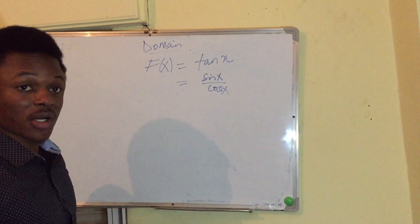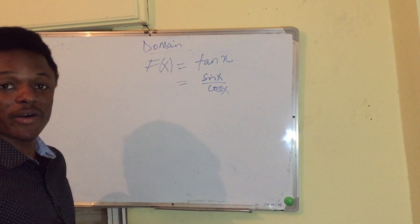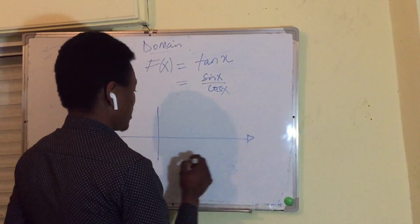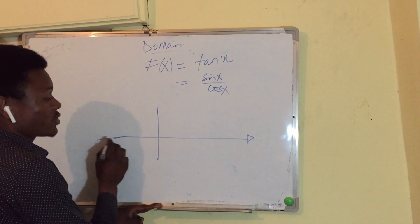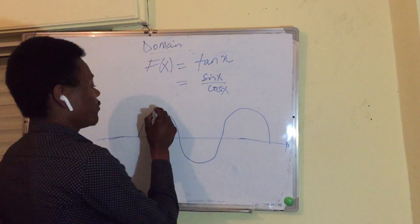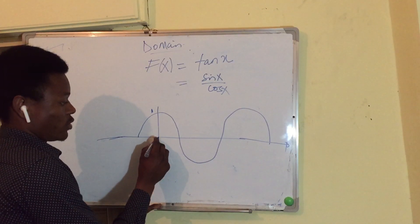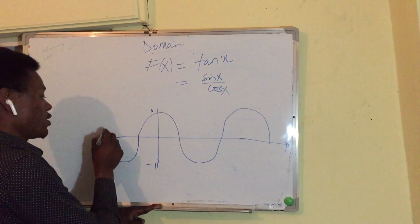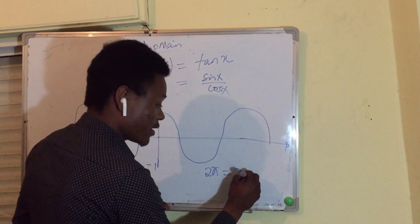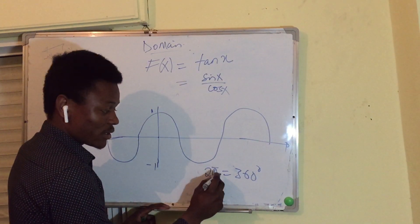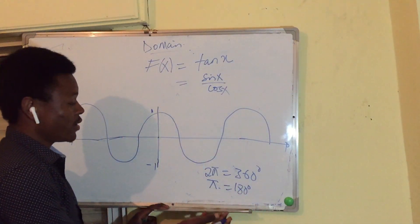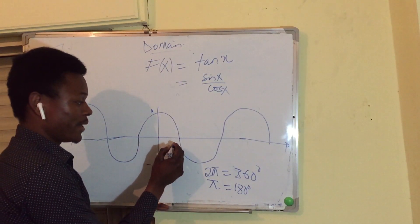So cos(x) cannot equal zero. To find where cos(x) = 0, let us look at the graph of cos(x). The graph of cos(x) starts at 1 when x = 0, comes down to -1, and follows a cyclic pattern. One complete cycle is 2π, which is 360 degrees.